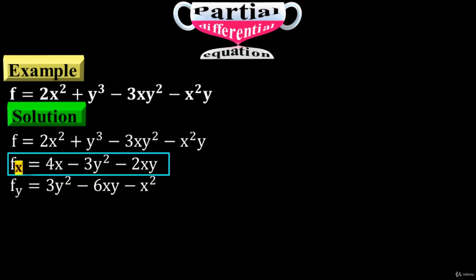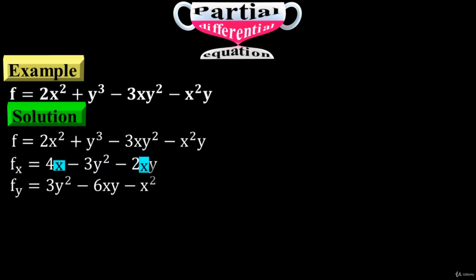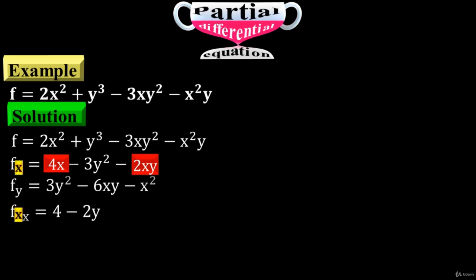Now start the second order. Take f sub x and differentiate it with respect to x. x exists at two places, so just differentiate these two terms with respect to x to have f sub xx equals 4 minus 2y.